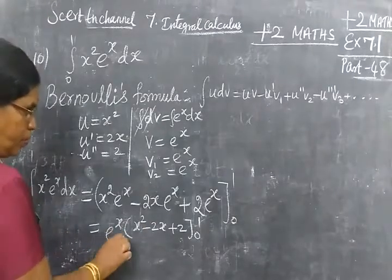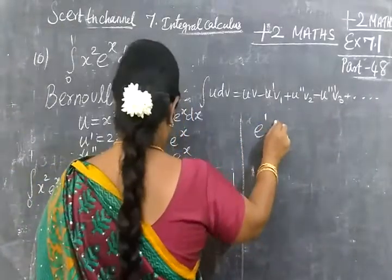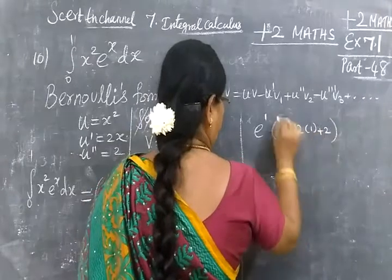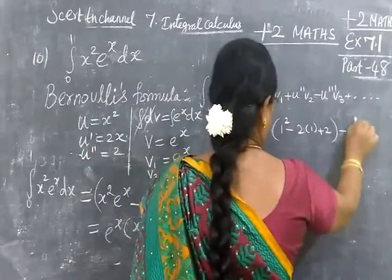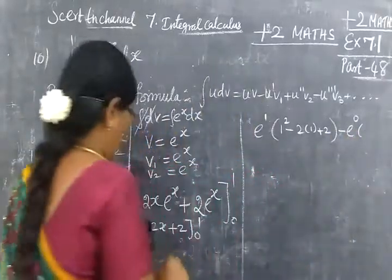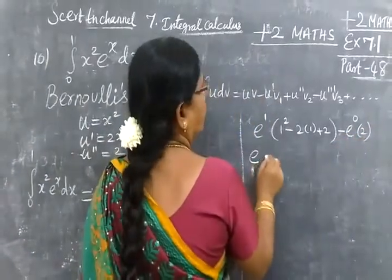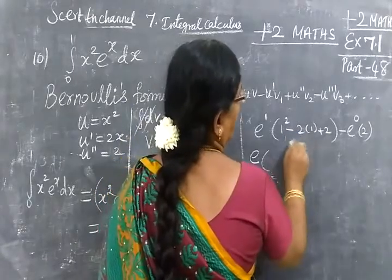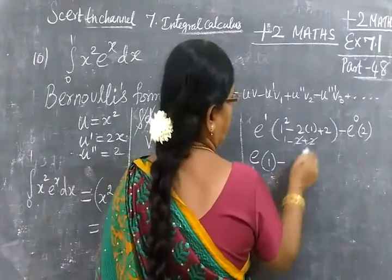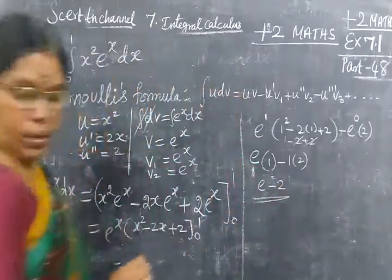e power 1, bracket, 1 squared minus 2 bracket 1 plus 2. So upper limit minus lower limit. e power 0, then bracket 0 minus 0 plus 2. So e, here 1, so 1 minus 2 plus 2 cancel. So 1. Anything power 0 is 1. So 1 bracket 2. So the answer is e minus 2.